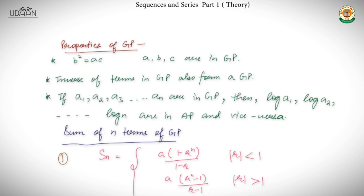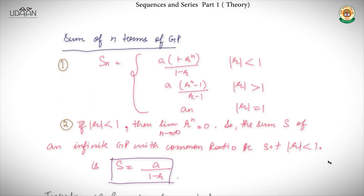Here is an important property of GP: if a1, a2, a3, ..., aₙ are in GP, then log(a1), log(a2), log(a3), ..., log(aₙ) are in AP, and vice versa. This is easily seen because log(a×b) = log(a) + log(b). So if two terms are in GP, their logarithms will be in AP.